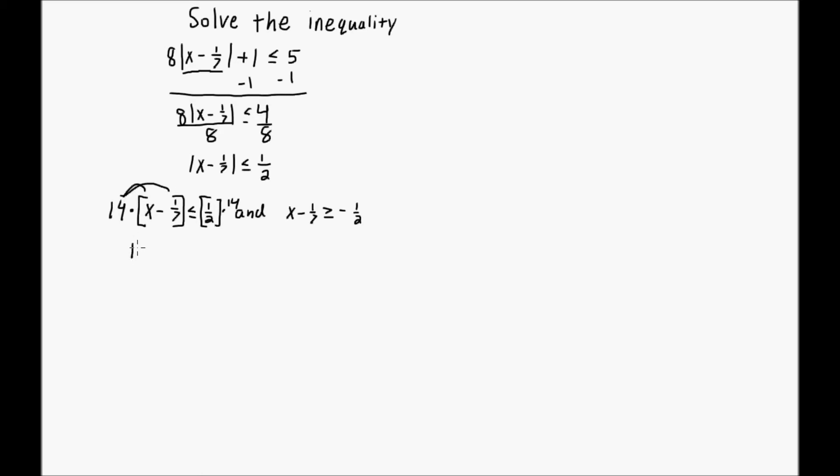14 times x is simply 14x. 14 times 1/7 is 14 divided by 7, so this becomes minus 2, is less than or equal to 14 times 1/2 is 14 divided by 2, so 7. Now I add 2 to both sides. And I have 14x is less than or equal to 9. Divide both sides by 14. And I have that x is less than or equal to 9 over 14.